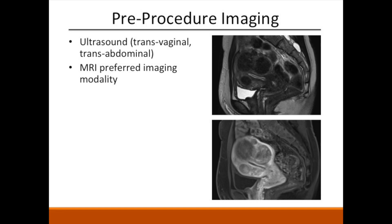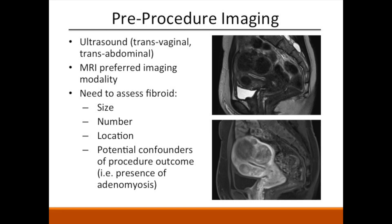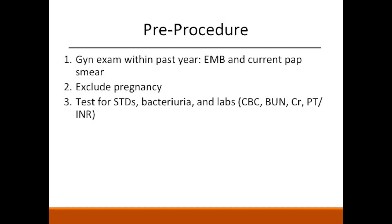Before the procedure, imaging should include a transvaginal and transabdominal ultrasound and MRI. Due to the operator-dependent nature of ultrasound, MRI is the ideal imaging modality. The goal for imaging is to assess fibroid size, number, and location. Other potential confounders of procedure success, like adenomyosis, should be investigated. The patient should have had a current normal pap smear and an endometrial biopsy to rule out other pathology. Pregnancy tests should exclude active pregnancy, and tests for STDs, bacteriuria, and other appropriate testing is recommended.